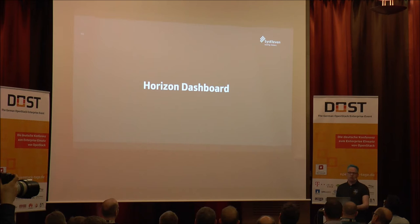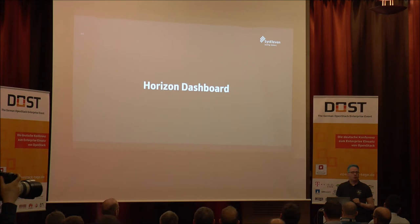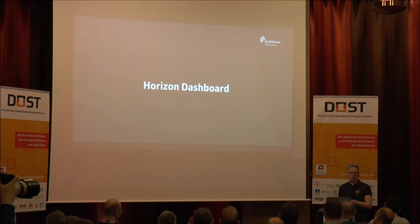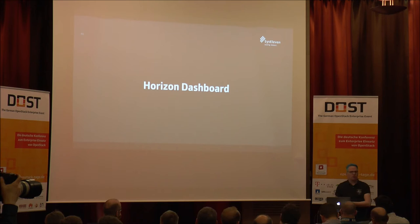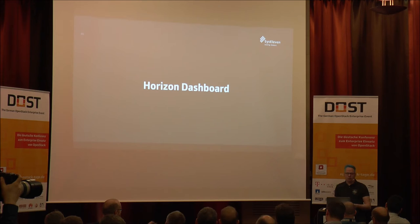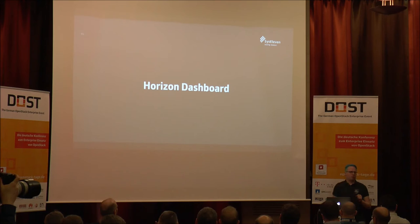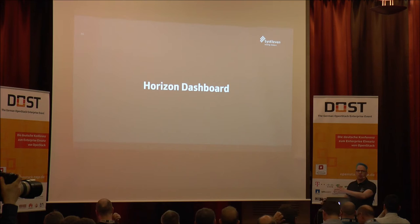Horizon Dashboard also uses Oslo policy and it decides most of the time which elements of the UI to show you. Sometimes you click on something and you get back the answer: no, you weren't allowed to do that. What has happened? Your policy JSON for a service that Horizon uses is not in sync with your service's own policy JSON, because they are using different files running on different machines. The Horizon Dashboard machine quite probably cannot even access the original policy JSON file for the service. You have to build a process to make sure that all the rules and role assignments are always in sync.